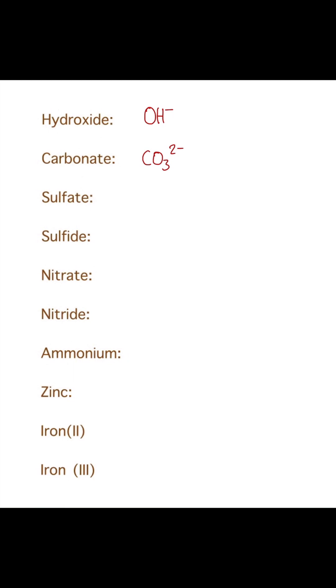Sulfate is SO4, also with a charge of two minus. Next we have sulfide. Sulfide you can actually find in the periodic table - that's in group six because it comes under sulfur, so that's S2 minus. We just have that so you don't get confused between sulfate and sulfide.